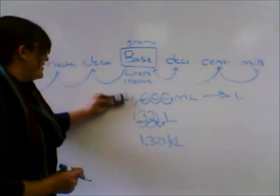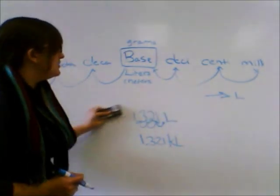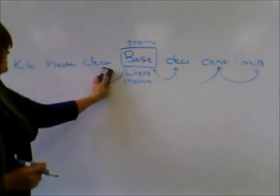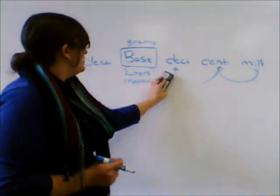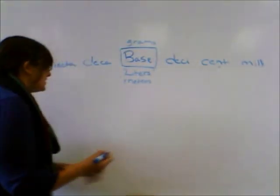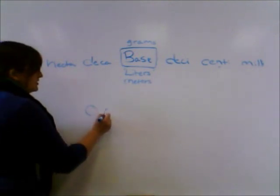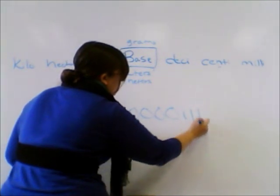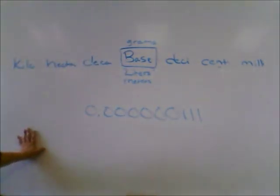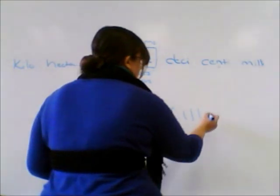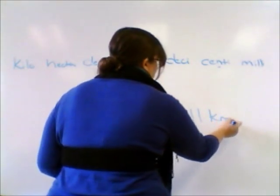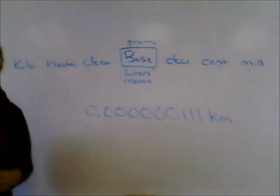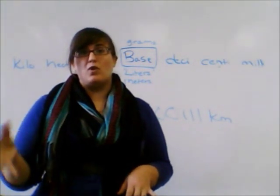Let's try a different one. What if we have a very small number and we want to make it more manageable by changing the units? Say that we have 0.000000111 kilometers. That's a lot of zeros — we want a nice simple number like 111.